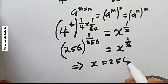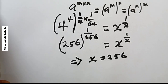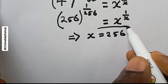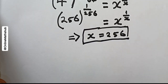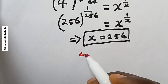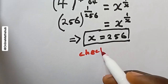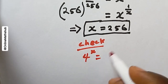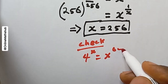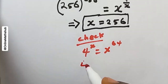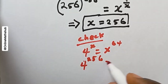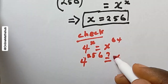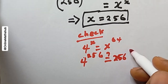At this point you can clearly see that we have a similar pattern on both sides of the equation. Comparing both sides, x is equal to 256. You may want to verify whether x = 256 satisfies the original problem, so let's run a quick check. We replace x with 256 in the original equation: 4 to the power 256 equals 256 to the power 64.